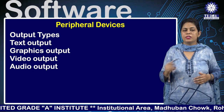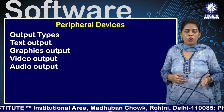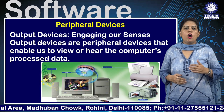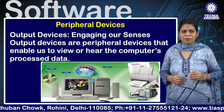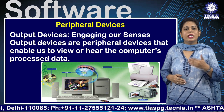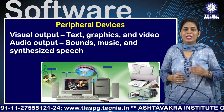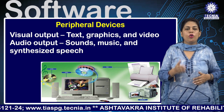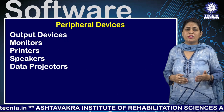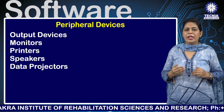There are many different types of output available: text output, graphics output, video output, and audio output. Output devices are peripheral devices that enable us to view or hear the computer's processed data — visual output like text, graphics, and video, and audio output such as sound, music, and synthesized speech. Output devices include monitors, printers, speakers, and data projectors.